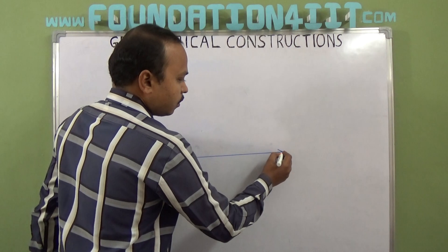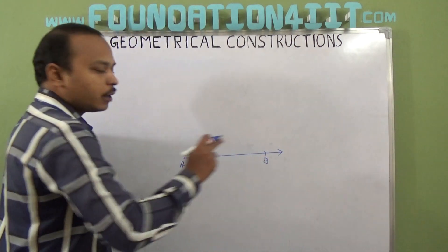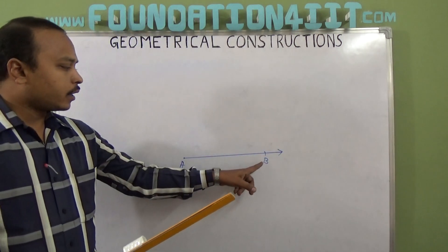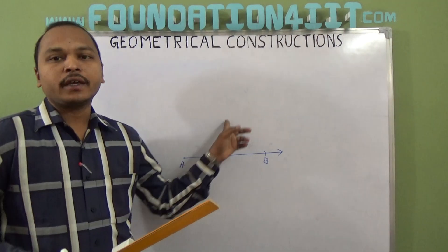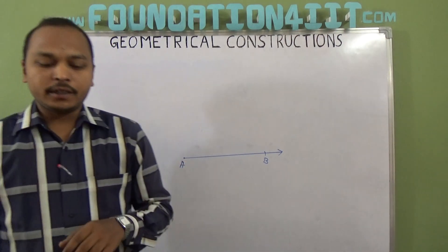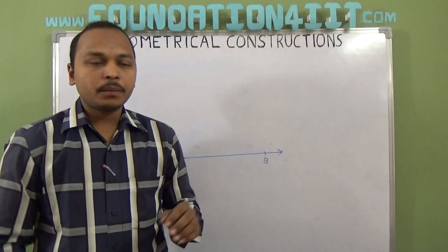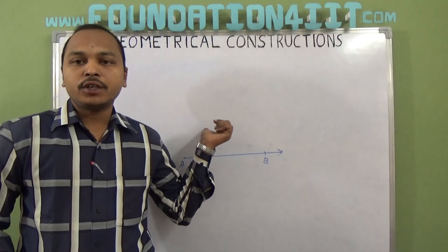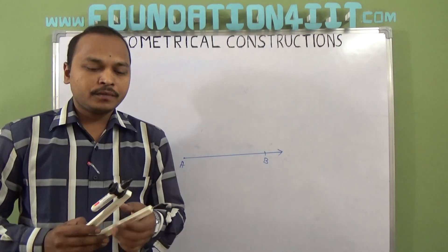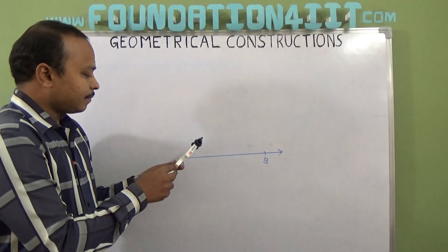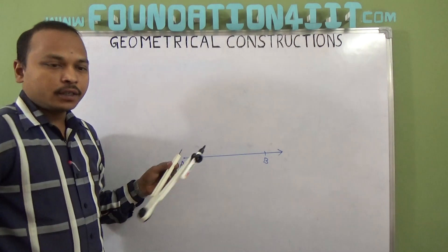This is base AB. At point A, I need to make a triangle where the angle should be 30 degrees. First of all, to construct 30 degrees we need to construct 60 degrees. So for 60 degrees, take the point with some reasonable radius and draw an arc.